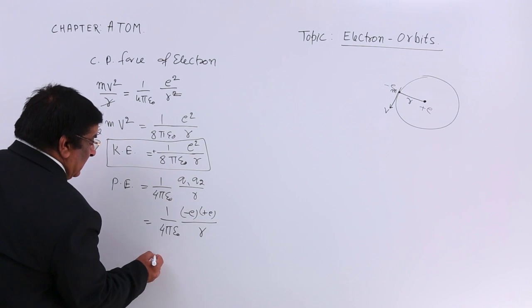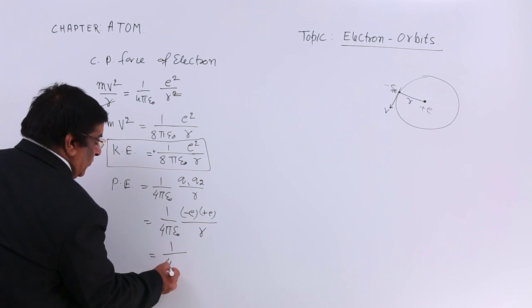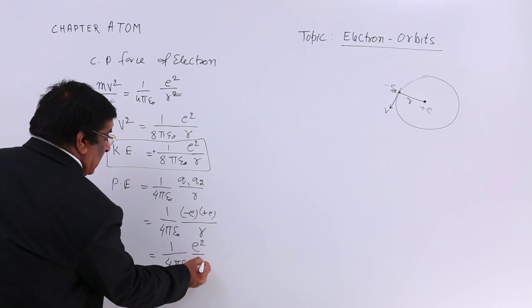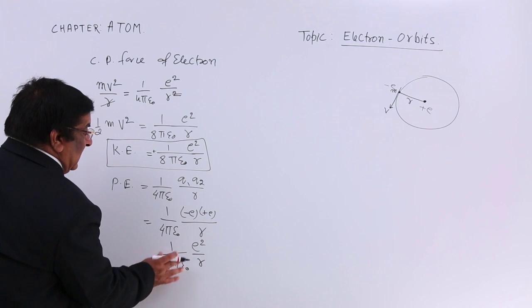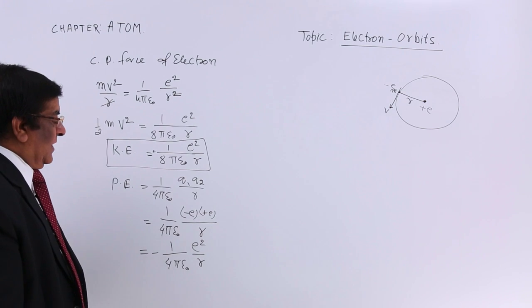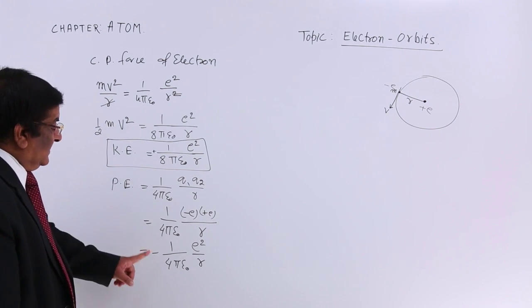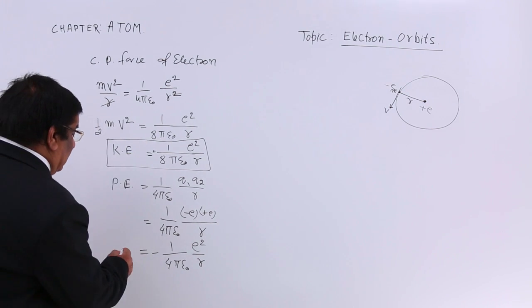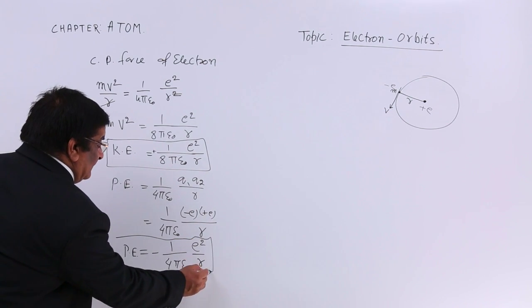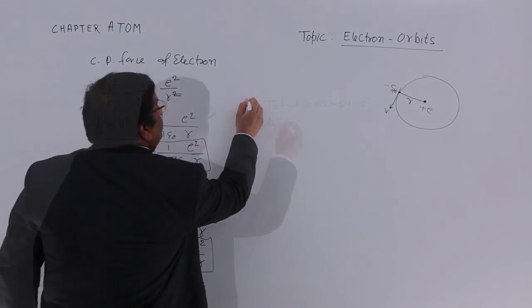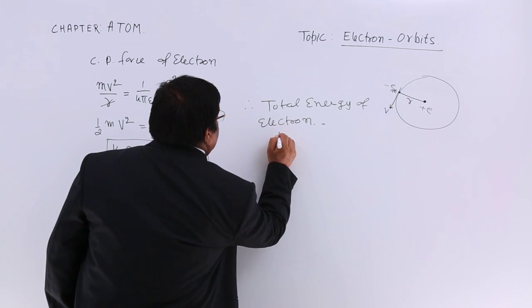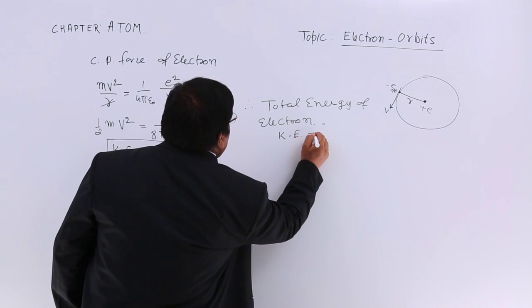So potential energy equals minus(1/4πε₀)(E²/r), and kinetic energy equals plus(1/8πε₀)(E²/r). The total energy of the electron is KE plus PE.